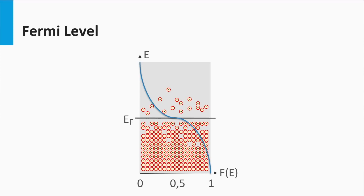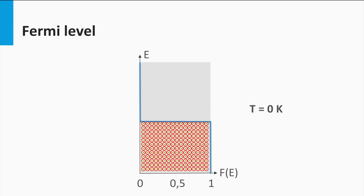For a metal it is easy to see where the Fermi level is positioned. Physicists use in general the term Fermi level, while chemists might call this level the total chemical potential of an electron. The shape of the Fermi-Dirac distribution does change with temperature. At absolute zero — a temperature of zero Kelvin or minus 270 degrees Celsius — the function looks like a step function. The probability to occupy a state below the Fermi level is 100%, whereas the probability above the Fermi level is 0%.